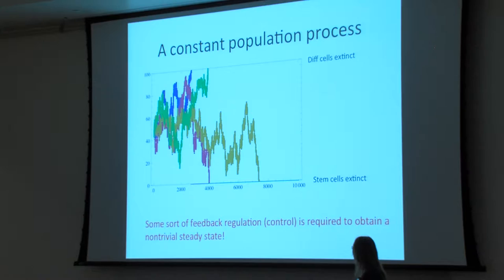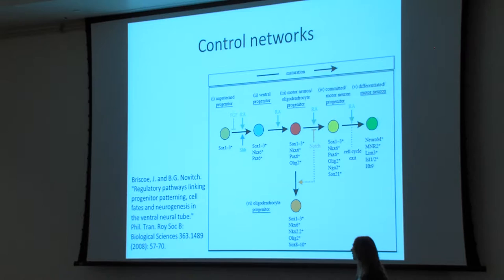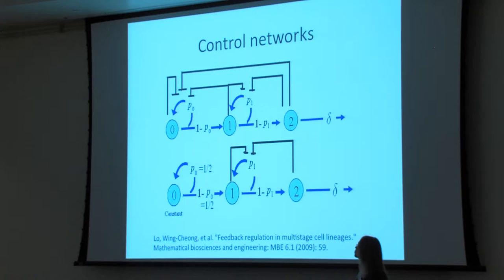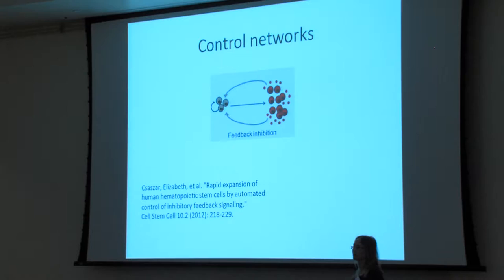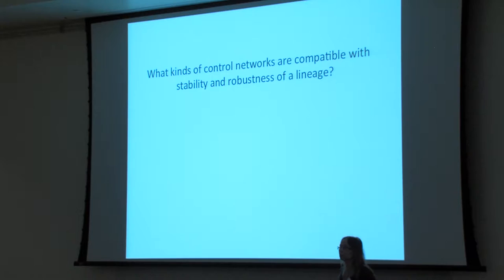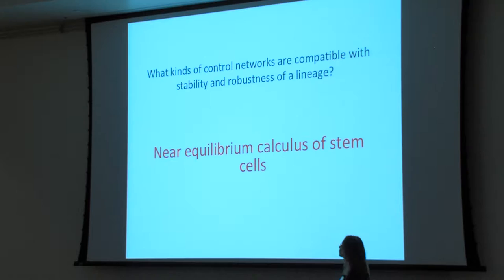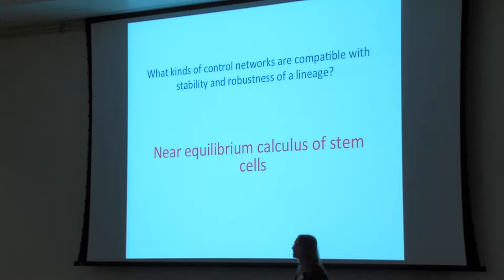Some sort of feedback regulation or control is required to obtain a steady state. People always assume such control exists — you can see all these arrows going from one cell type to another, but nobody really knows how this happens. As a mathematician, I want to study all of these control networks — what I call the calculus of stem cells. We want to consider all sorts of control that one cell type exerts on another and study their properties: advantages and disadvantages of each system.